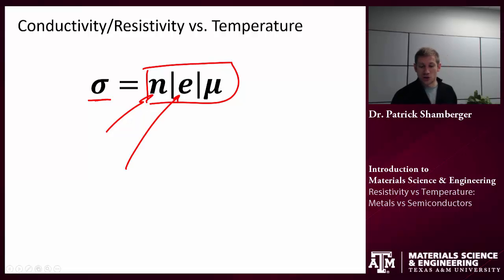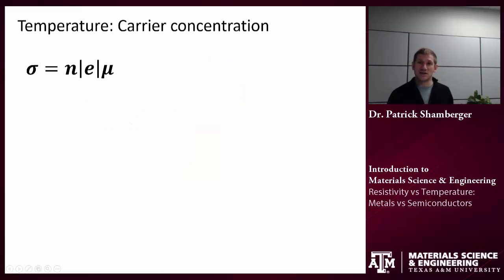E is the charge. So if this is just an electron, then we have a single electronic charge. If it's an ion, it could be a multiple of the electronic charge. And μ is the mobility. How easily do these carriers move around? So let's think about how does temperature affect each of these terms differently.